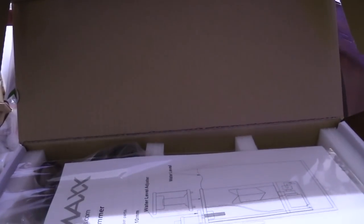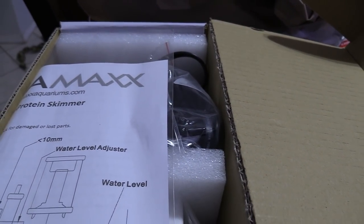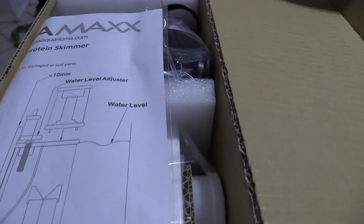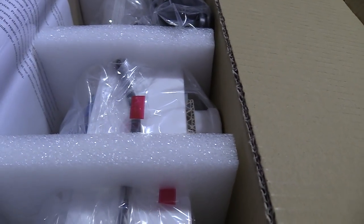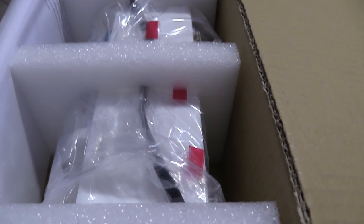I got this protein skimmer for the heart of my filtration for an Innovative Marine Lagoon 25 gallon. This protein skimmer is rated up to 30 gallons for a light bio load, but if you have a heavy bio load, it's rated for 20 gallons.